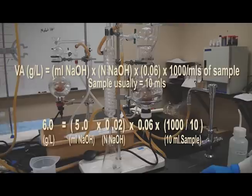To calculate the VA level, use the following formula: the VA in grams per liter equals the milliliters of sodium hydroxide times the normal value, times 0.60, times 1,000 divided by the milliliters of wine in the sample, in this case, 10 milliliters. Record the values.